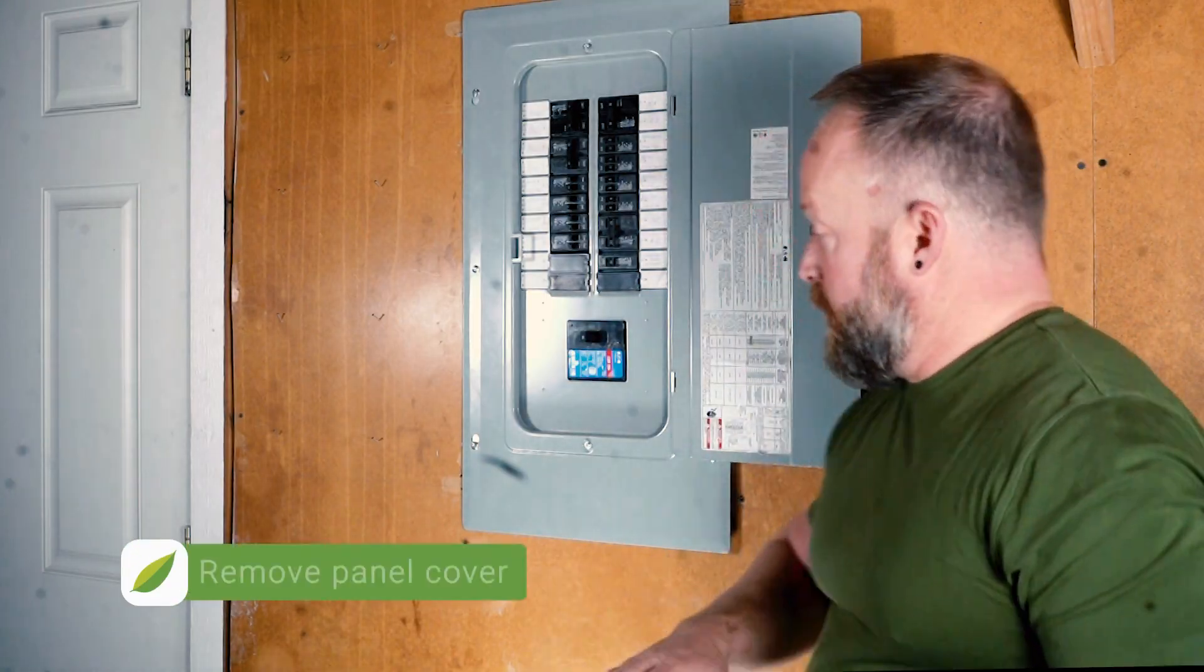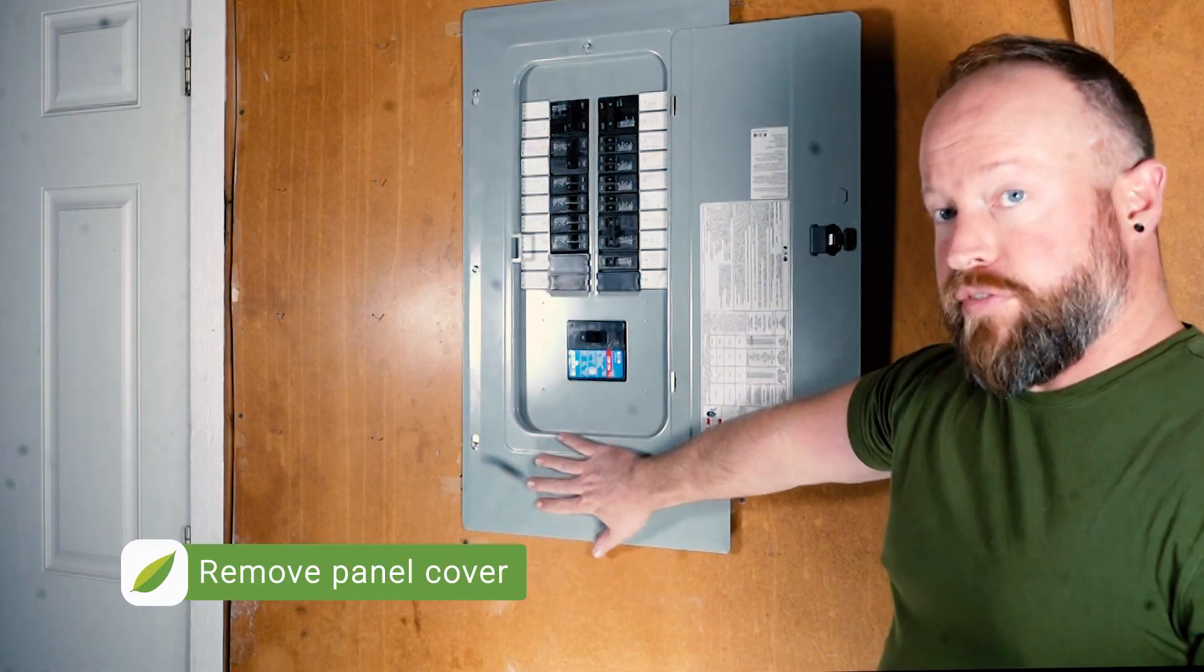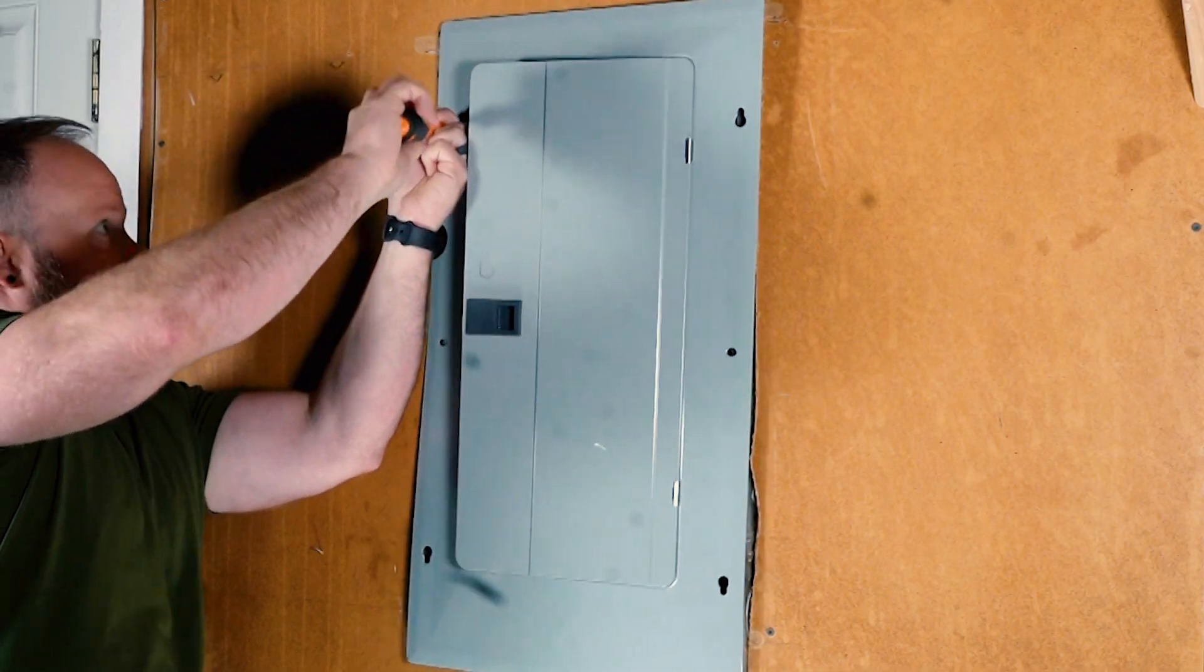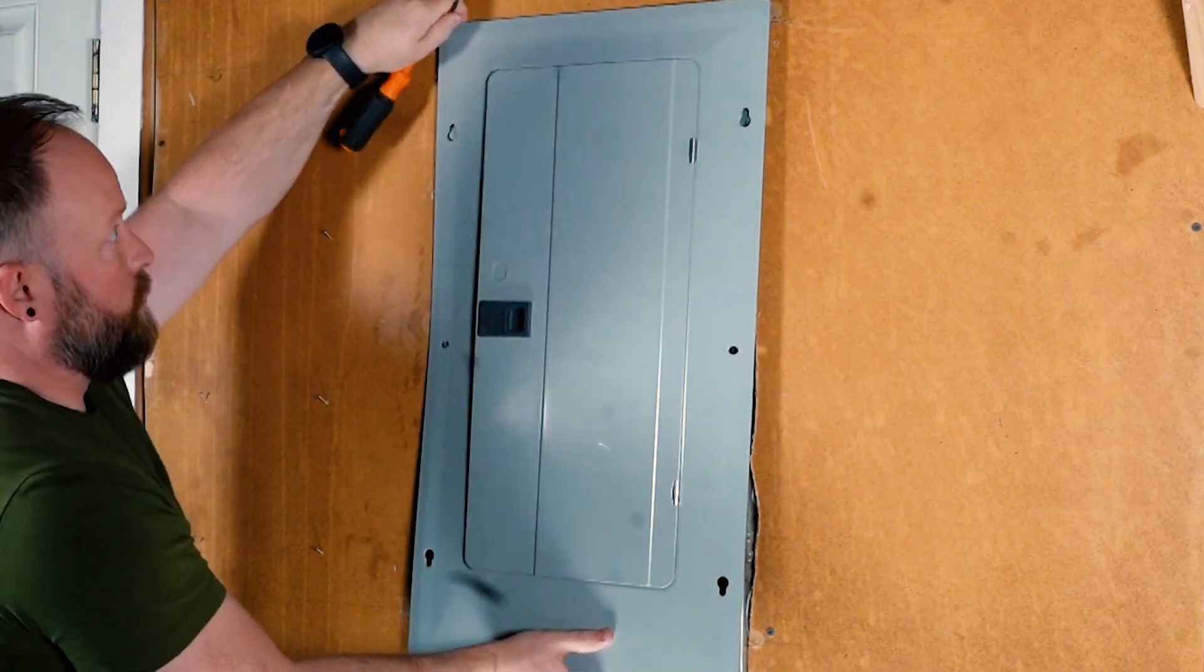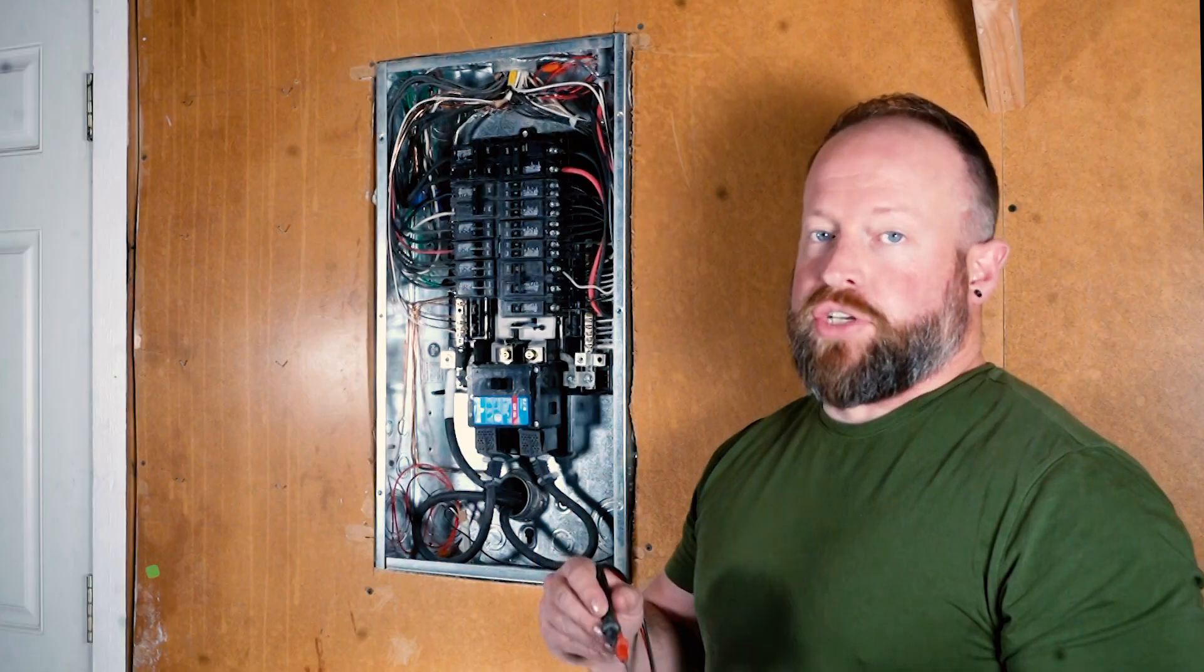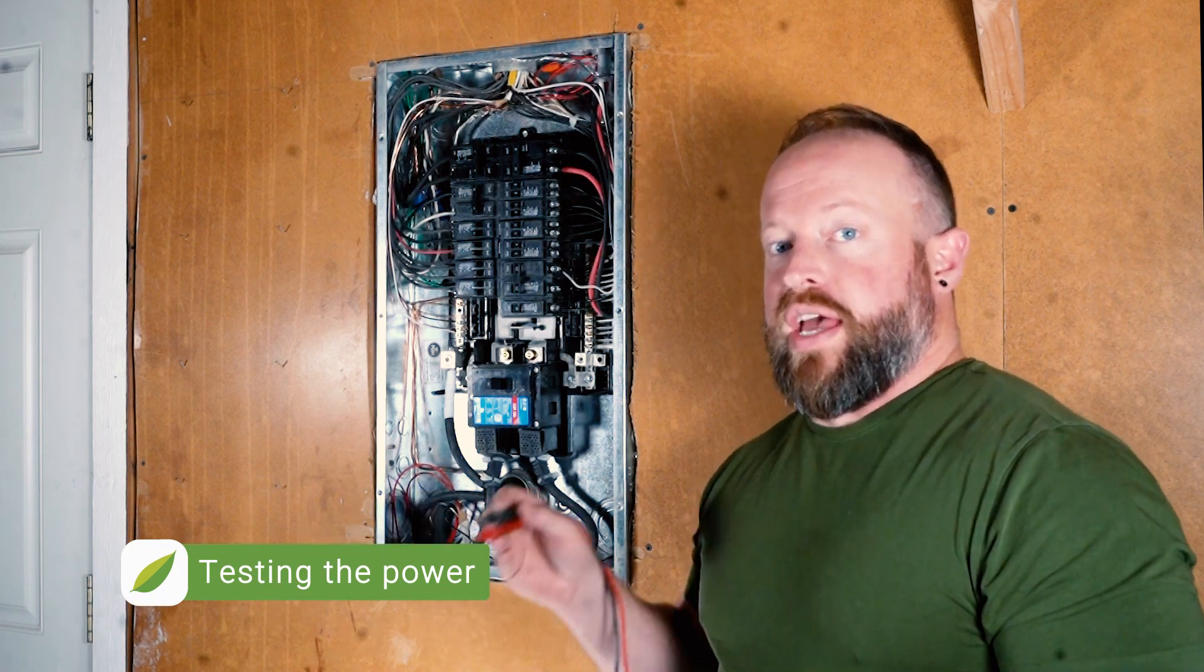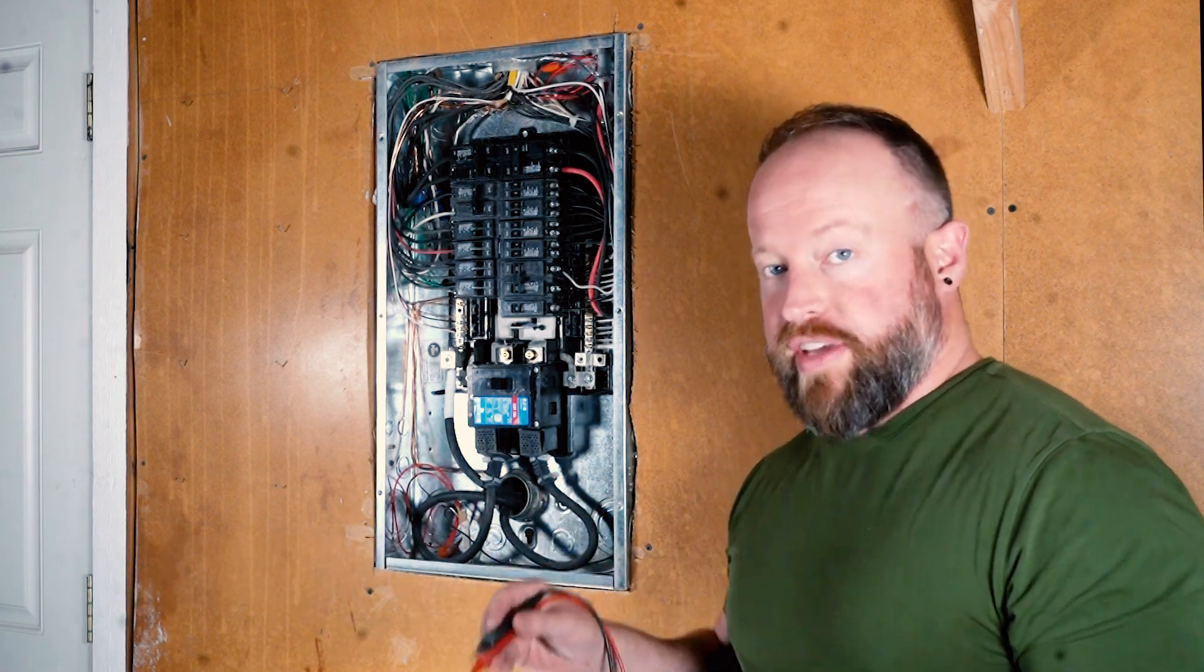The second step is to remove the cover of the panel to access the wiring to the breakers. Make sure that you're safe by testing the power coming out of your breakers and the mains breaker to make sure none of it is live.